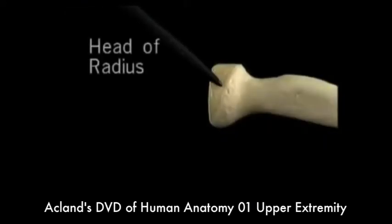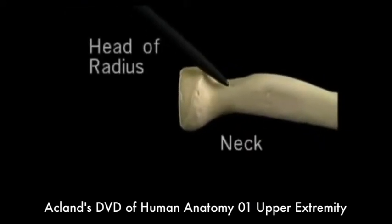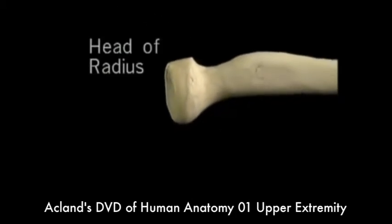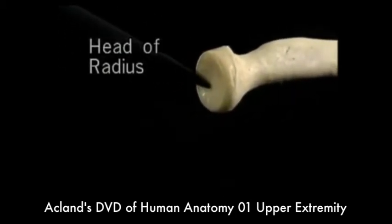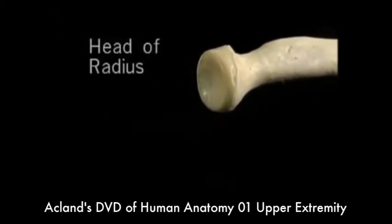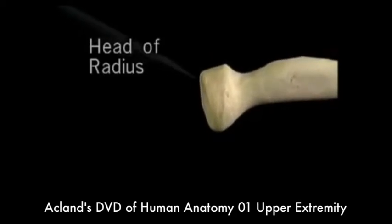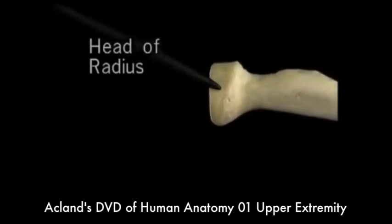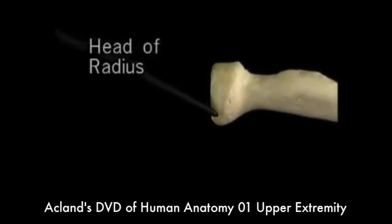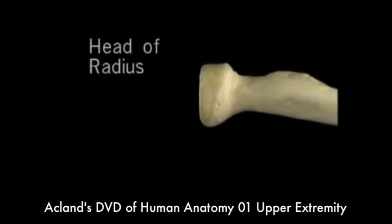This is the head of the radius. This is the neck. The end of the head articulates with the capitulum of the humerus. Its curved side articulates partly with the radial notch of the ulna and partly with the ligament that surrounds it, as we'll see.